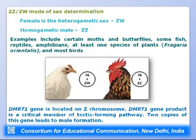In birds, the DMRT1 gene is located on the Z chromosome. Its product is a critical member of the testis-forming pathway — two copies of DMRT1 lead to male formation. Thus ZZ individuals with two copies of DMRT1 differentiate as males, while ZW individuals with only one copy of DMRT1 develop as females.